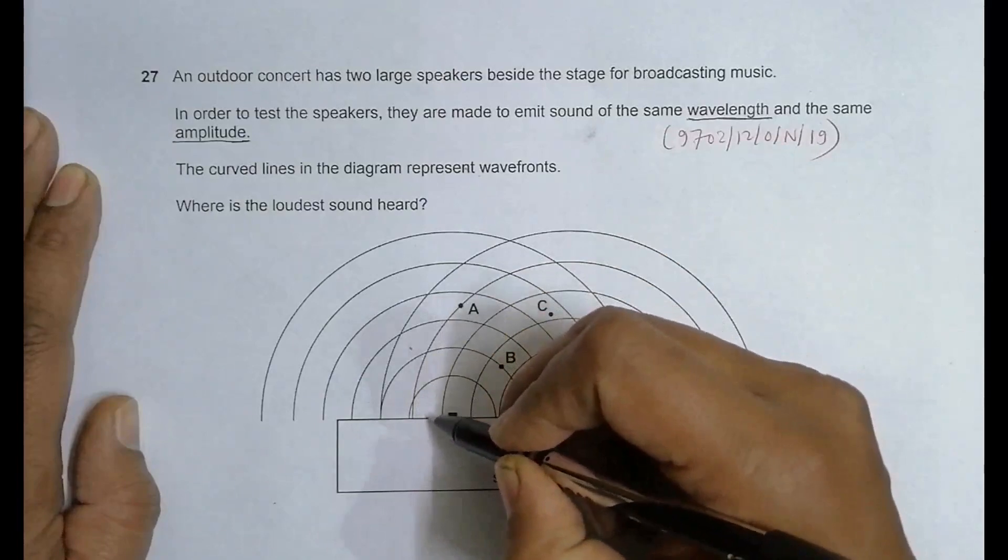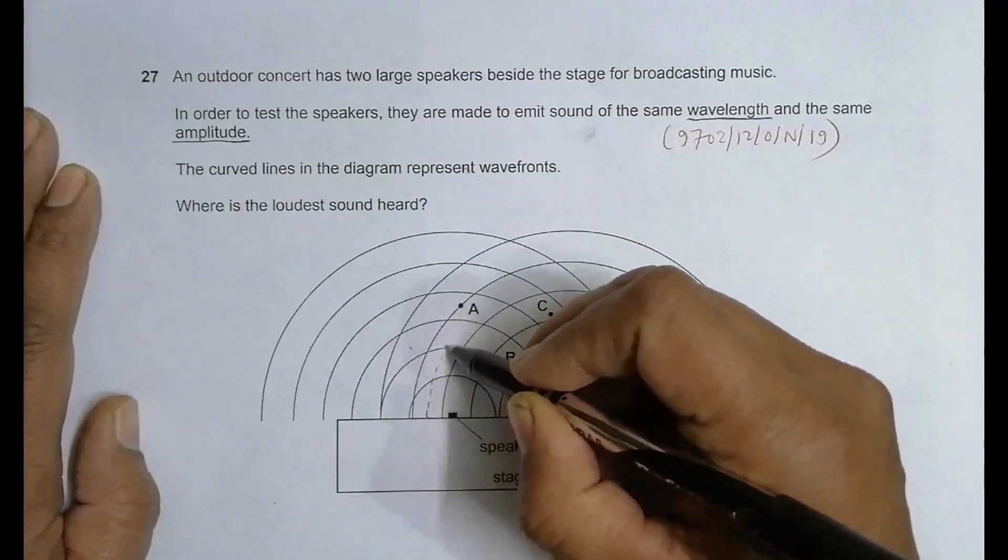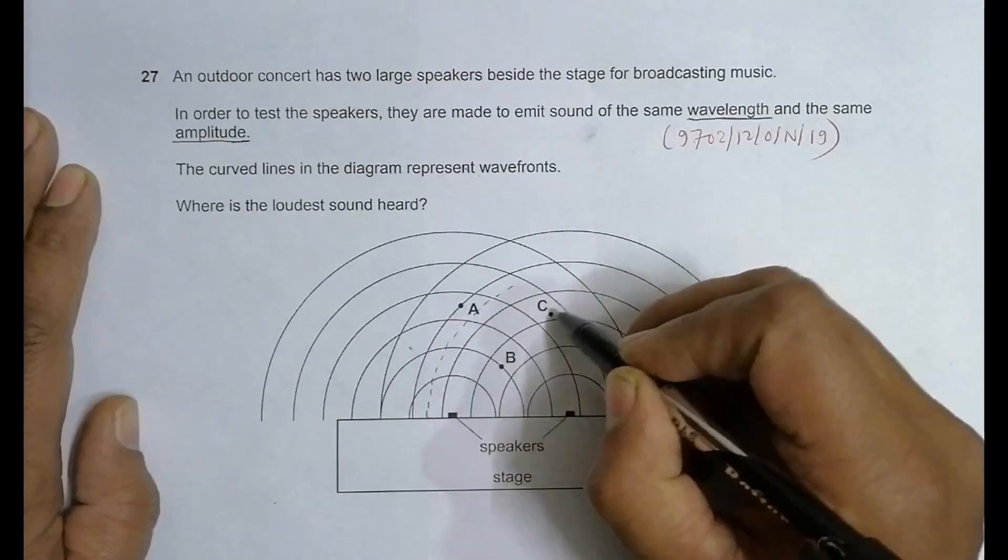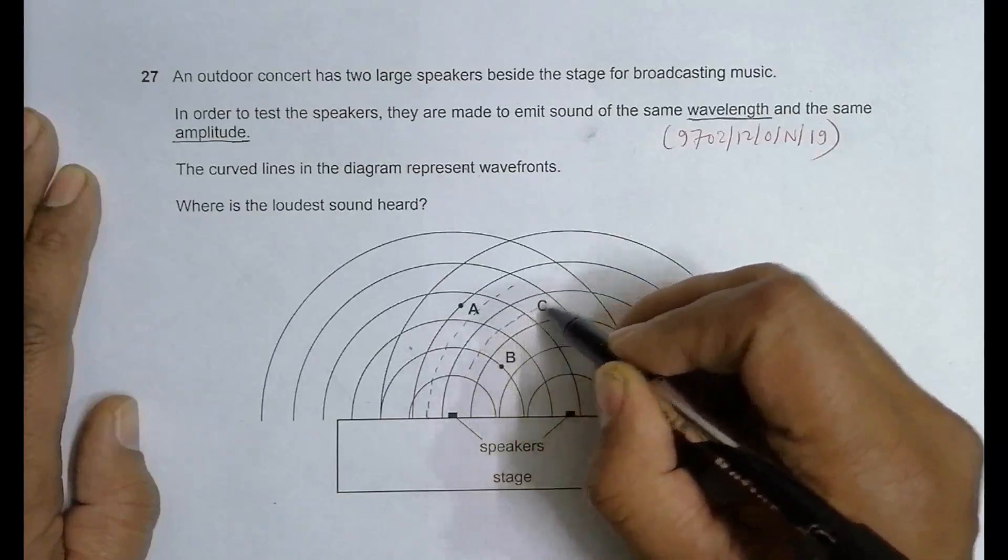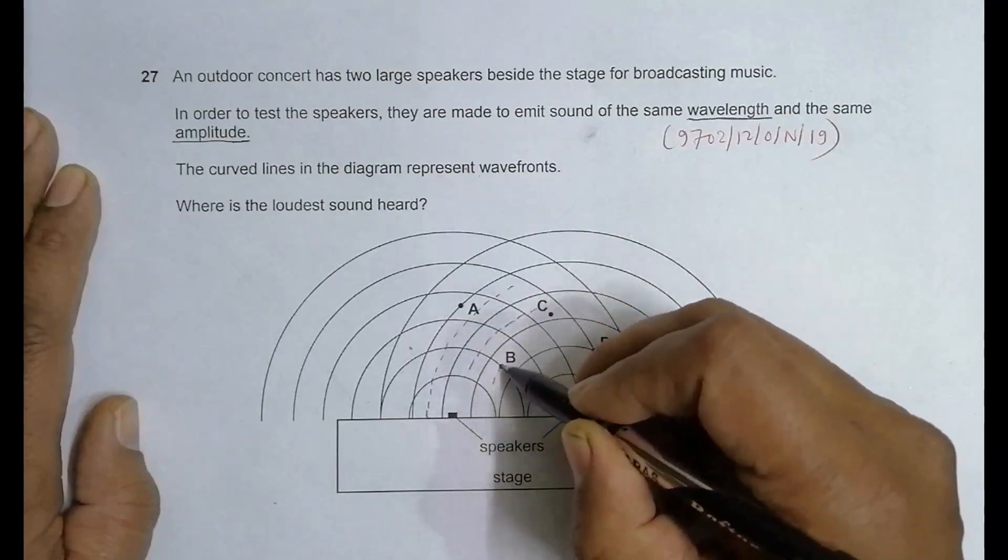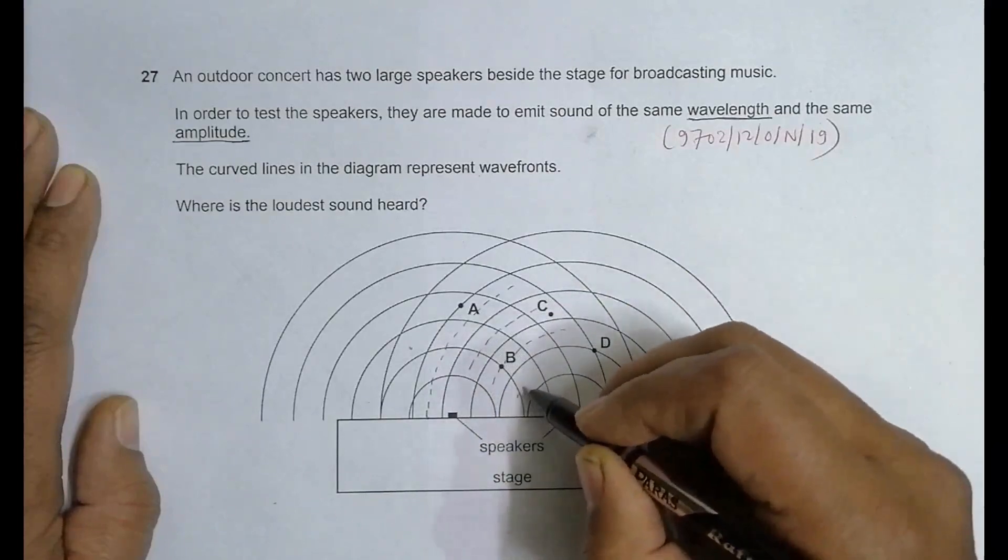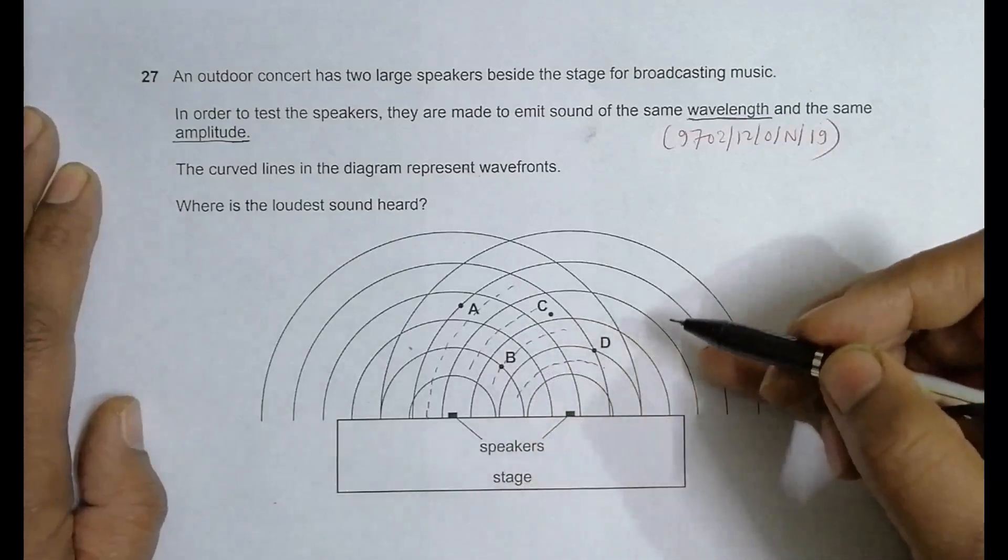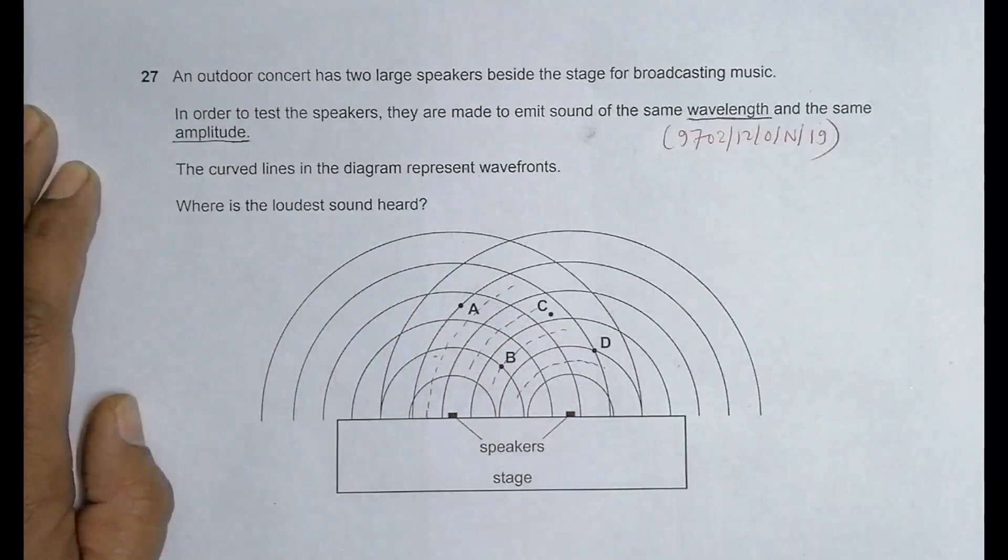If they are the crests, then trough will be in between them. So if this is the crest, trough will be like this, somewhat like this, in between the crests and crests.